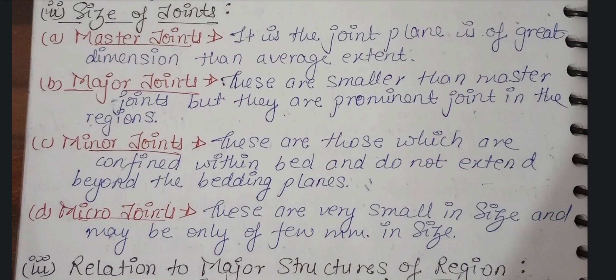Minor joints are smaller than the major joints. These are the ones confined within the beds and do not extend beyond the bedding planes. Then micro joints, which are the very smallest types. So, master joints are the largest and micro joints are the smallest.